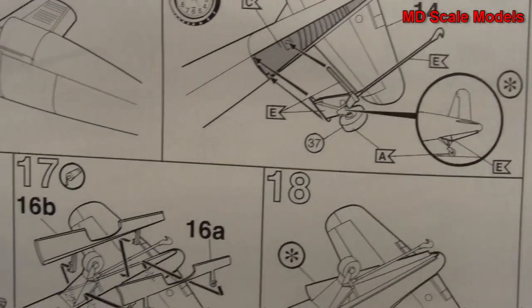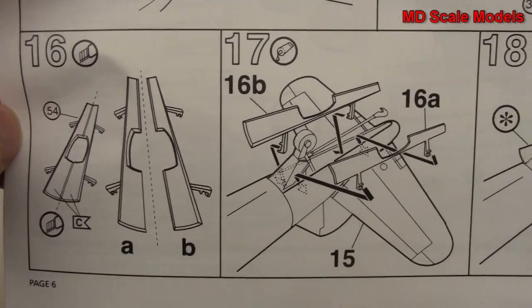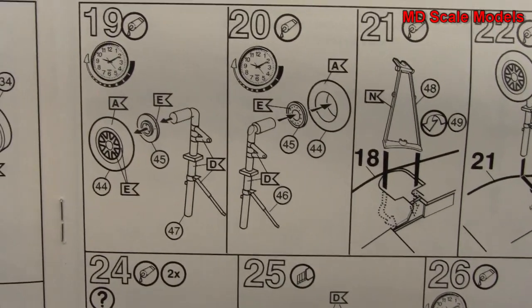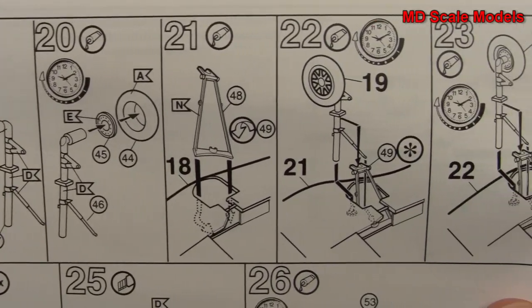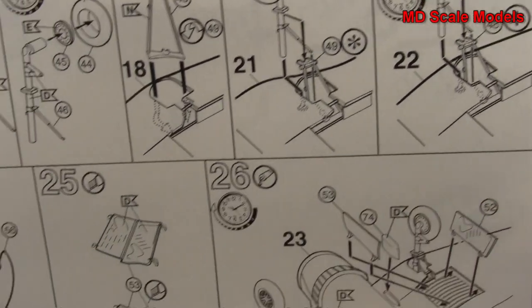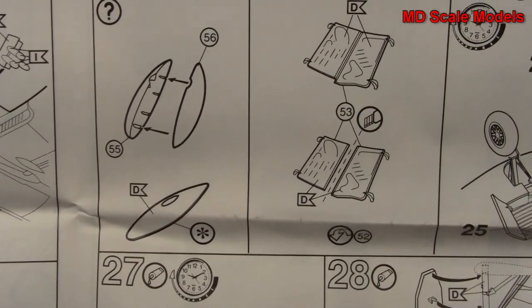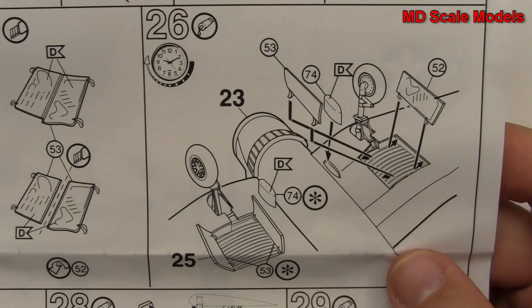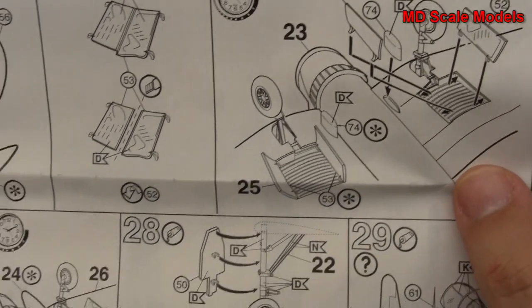Or tail wheel sorry. Then we've got our wheel well covers as if it's open. Our main landing gear is then put together there. And we've got our fuel tanks, wheel well covers, and those were quite nicely molded.